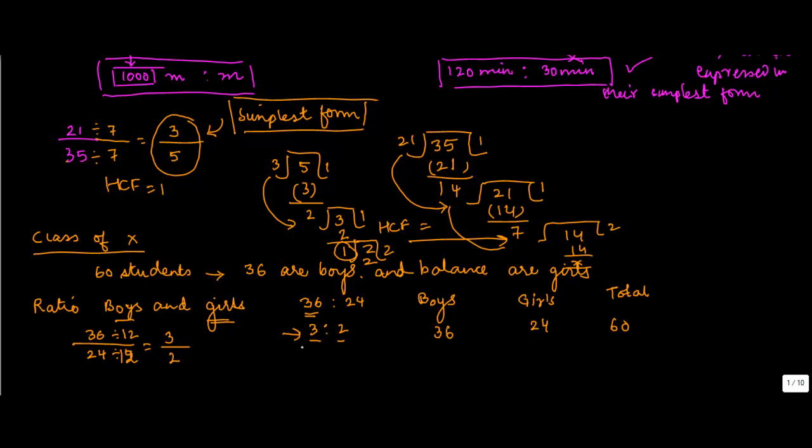This 3 is to 2 denotes that the ratio of boys and girls is 3 is to 2, or for every 3 boys there are 2 girls in the classroom, which is classroom 10th.